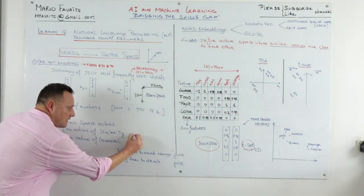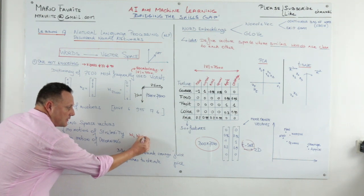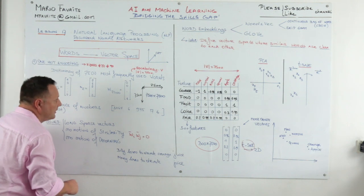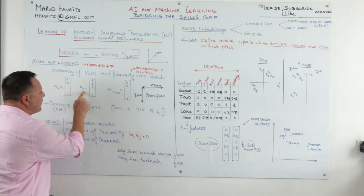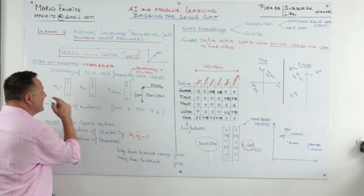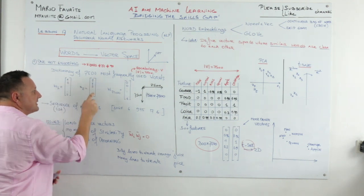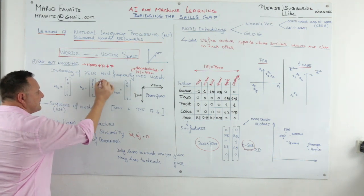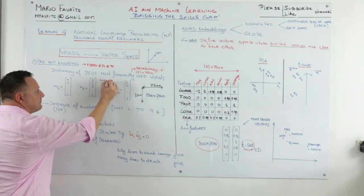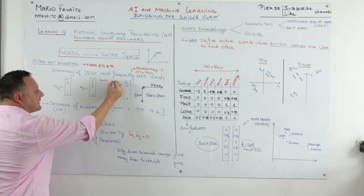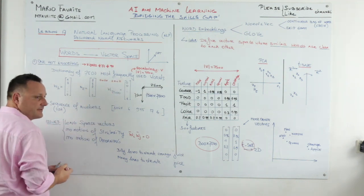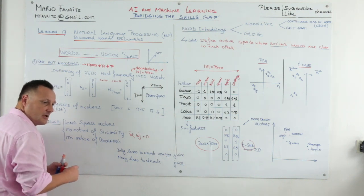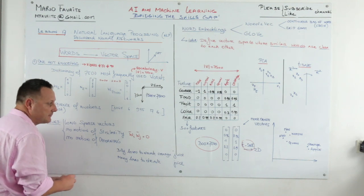Another issue is that there is no notion of similarity between these vectors. If you take word i and compute the dot product with word j, you get zero. For example, take vectors one and two: one times zero is zero, plus zero times one is zero, plus zero times zero is zero. So in the end it gives you zero — all words are independent and very different from each other.